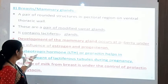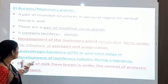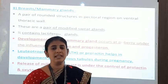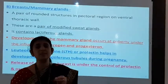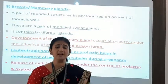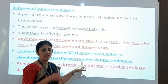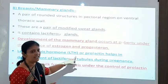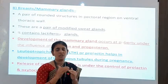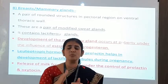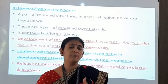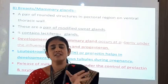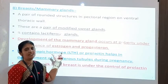The luteotropic hormone LTH, also called prolactin, helps in the development of lactiferous tubules during pregnancy. During pregnancy, lactiferous ducts that secrete milk are developed in the mammary gland under the influence of LTH or prolactin. So for the development of mammary glands, the responsible hormones are estrogen and progesterone, and for lactiferous tubule development during pregnancy, the hormone is prolactin or LTH.